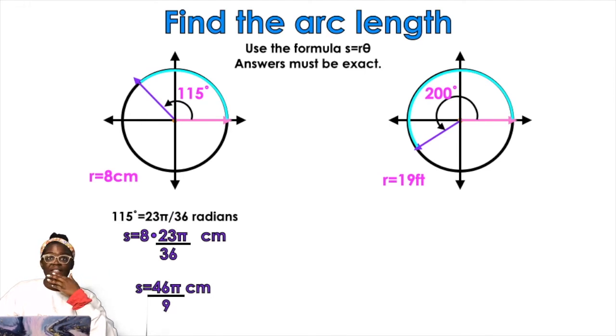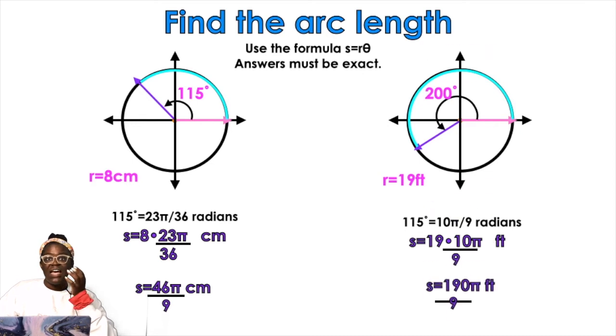I'm going to do that again with the other problem. I'm going to convert 200 into radians. That's going to give me 10 pi over 9. Our radius is 19 feet, so we're going to do 19 times 10 pi over 9. So 190. Didn't I tell you the bell was going to ring? 190 feet over 9.